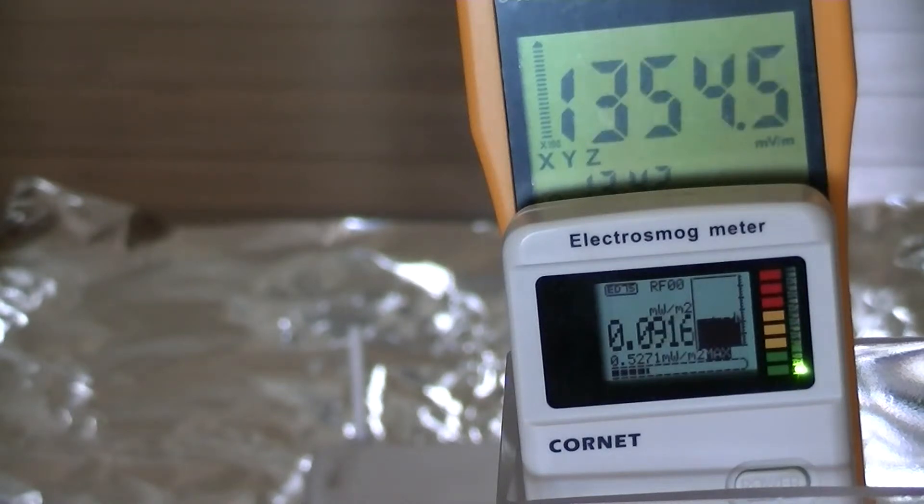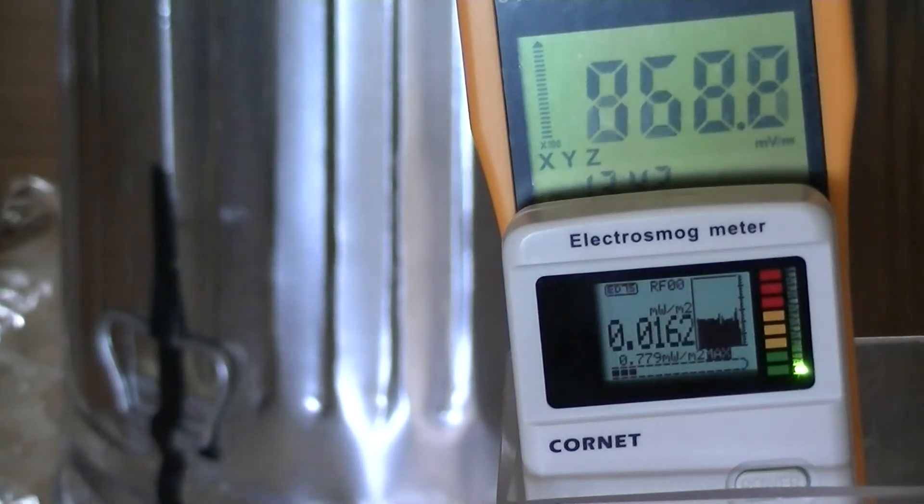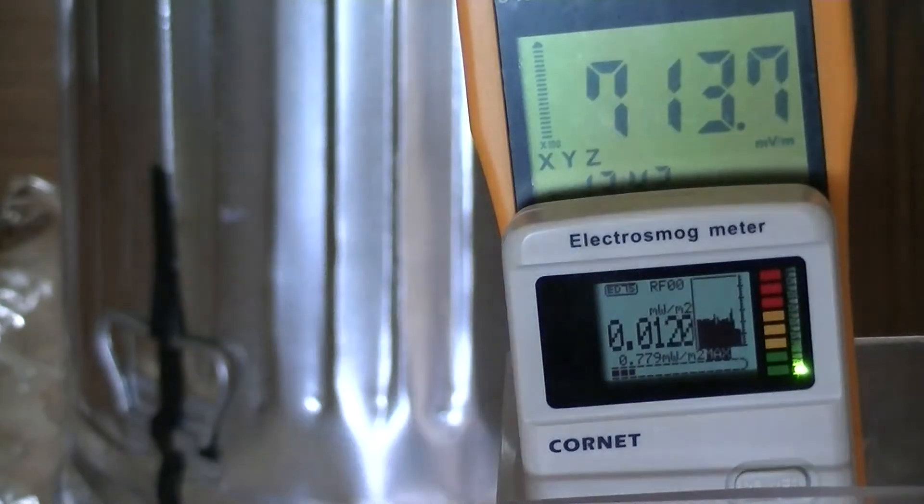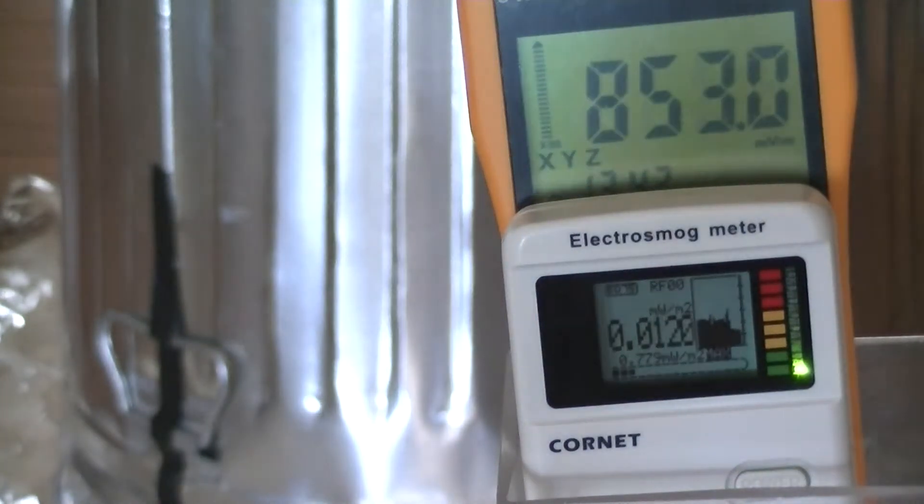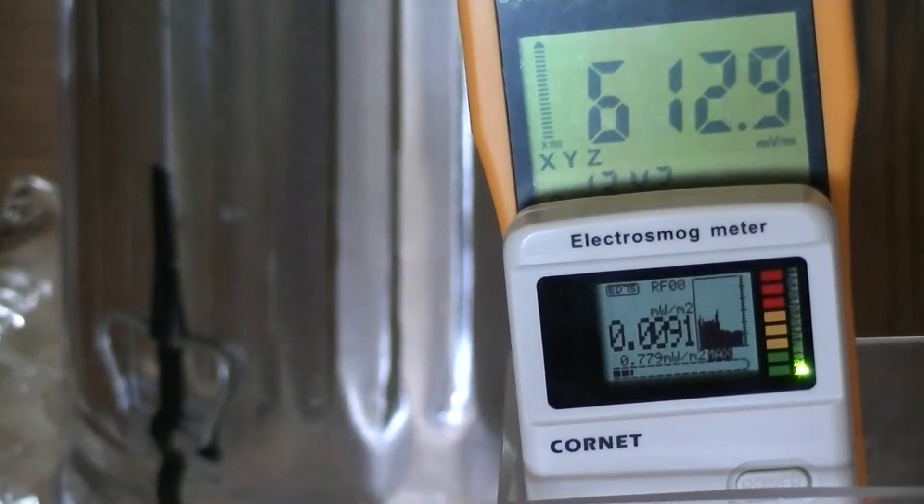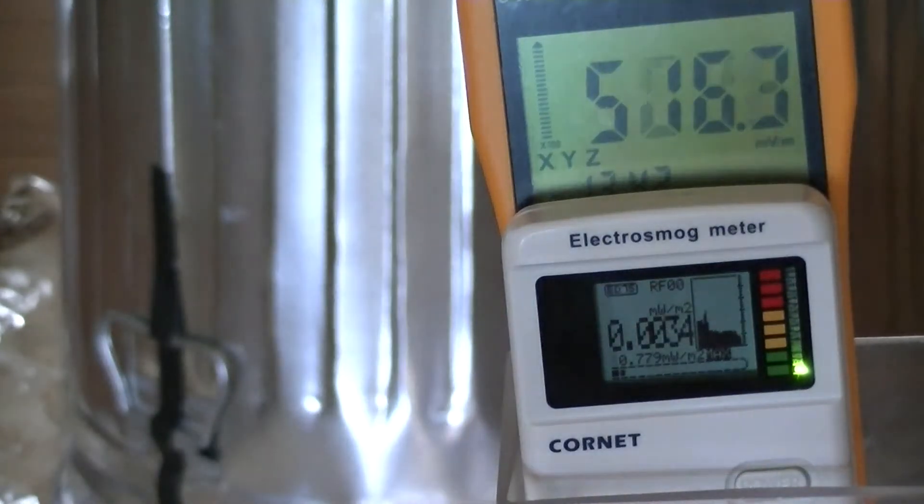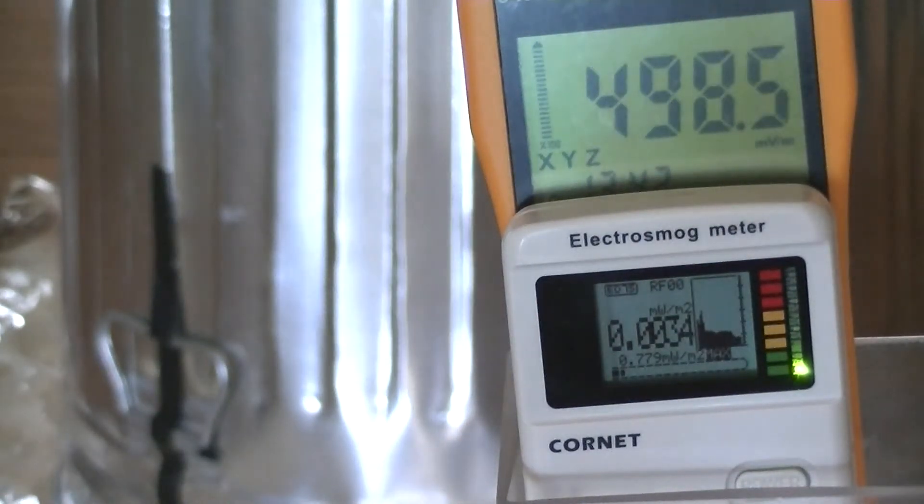Our next Faraday cage is a metal trash can. It's currently ungrounded. That's what we get with a metal trash can. Let's ground it. It's now grounded and that's what we're reading.